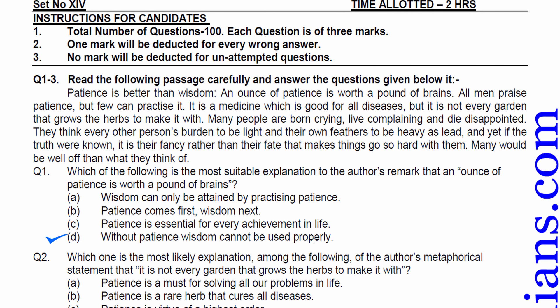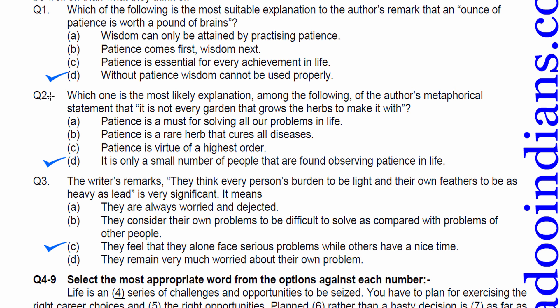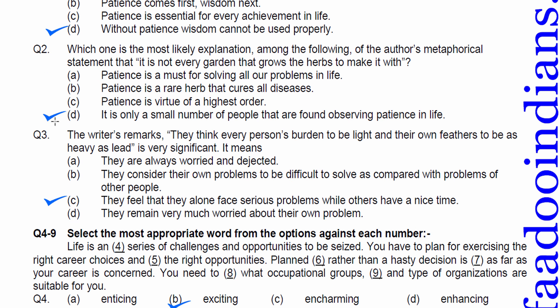Based upon it, we will do question number 1. Which of the following is the most suitable explanation to the author's remark that an ounce of patience is worth a pound of brains? Here, author is comparing patience with the brain. And from the passage, the theme hovers around patience, which is a virtue and of high value than brain. Therefore, option D suits fit, i.e. without patience, wisdom cannot be used properly.